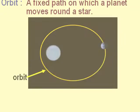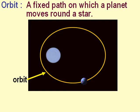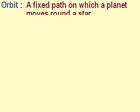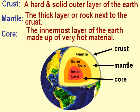Orbit is a fixed path on which a planet moves around a star. Crust is a hard and solid outer layer of the earth.